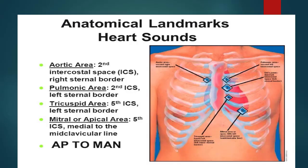These are the anatomical landmarks for heart sounds. The aortic area is at the second intercostal space on the right sternal border. The pulmonary area is at the second intercostal space on the left sternal border. The tricuspid area is at the fifth intercostal space on the left sternal border. The apical area is at the fifth intercostal space medial to the mid-clavicular line. We also have ERB's area at the third intercostal space on the left sternal border.